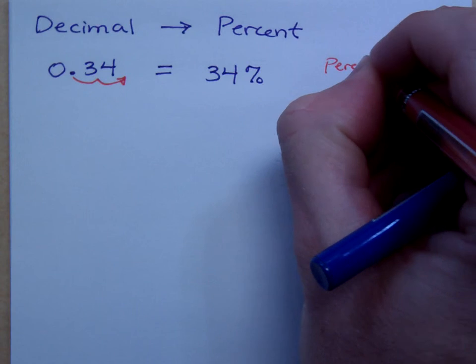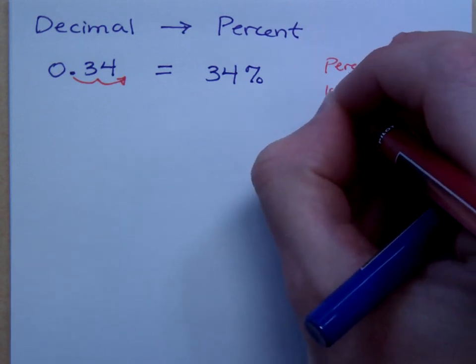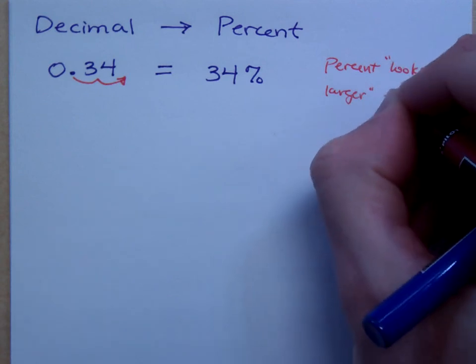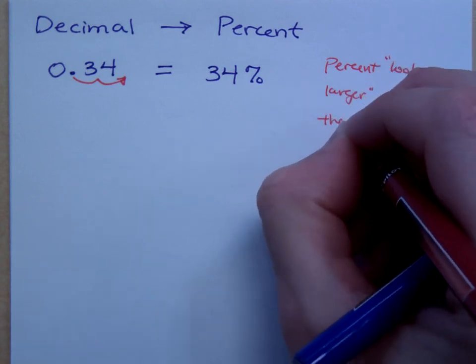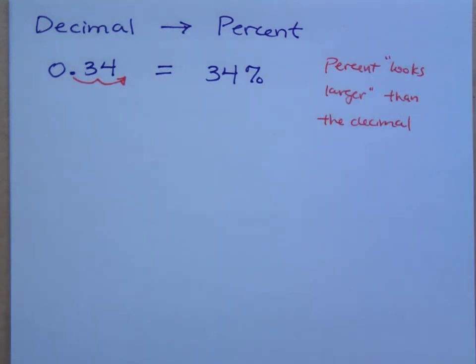The percent looks larger than the decimal. So when you're doing this, the percent is always going to look larger than the decimal equivalent.